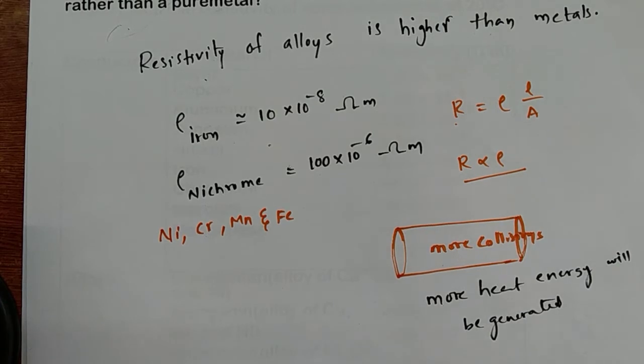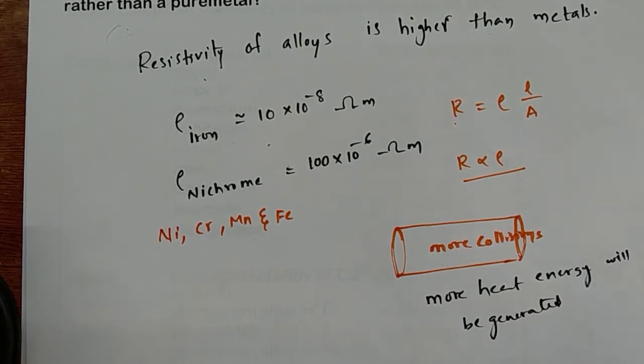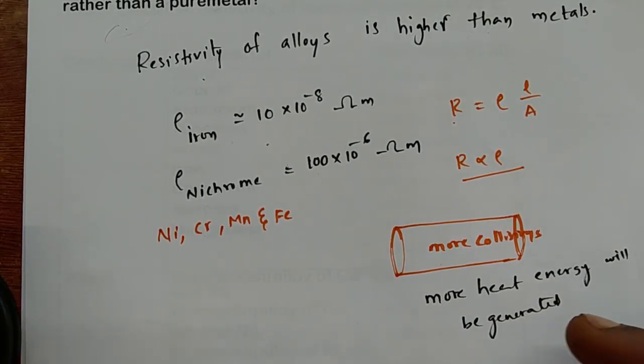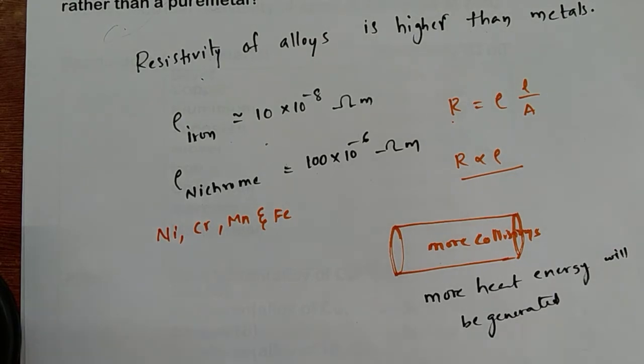Because of that, we can easily cook our meals. If less collisions occur, less resistance and less heat will be generated, and we can't cook. This is one reason.